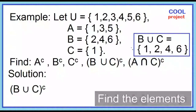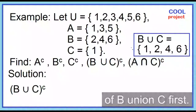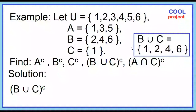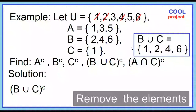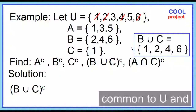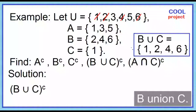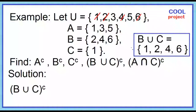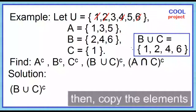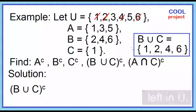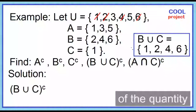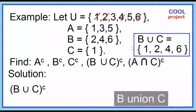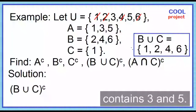What is the complement of the quantity B union C? Find the elements of B union C first. Remove the elements common to U and B union C, then copy the elements left in U. The complement of the quantity B union C contains 3, 5.